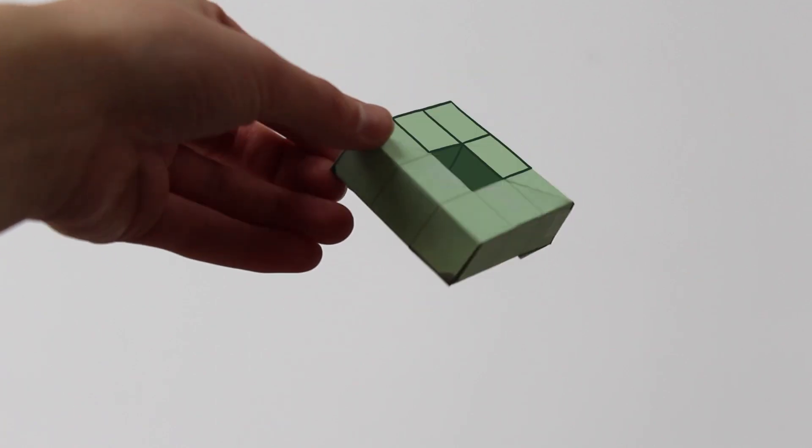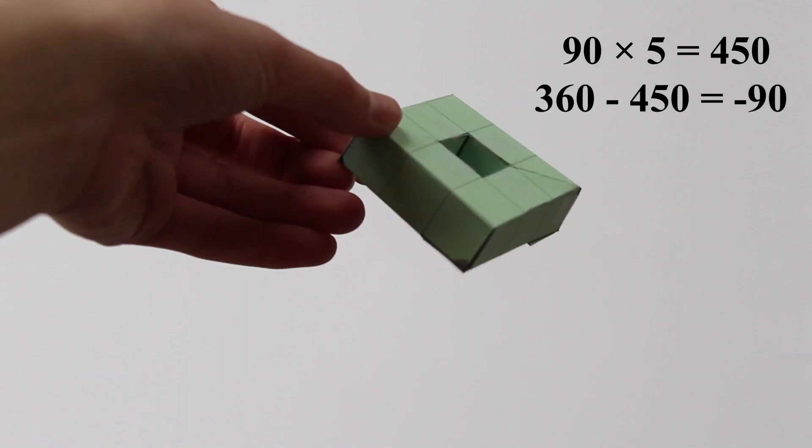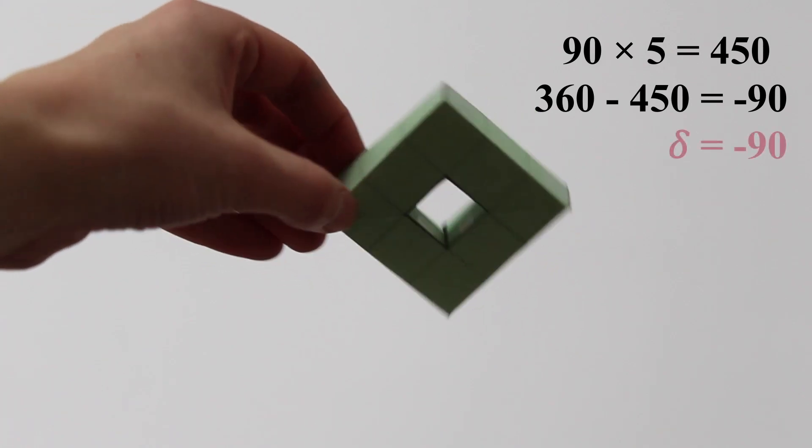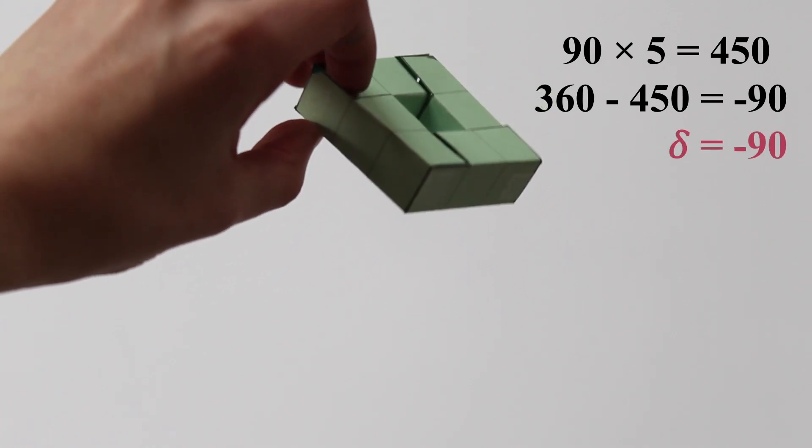At the inside corners, there are five squares meeting at a vertex. This means that there is too much angle. So the angle deficiency is negative. Around each of these vertices, there is an angle of 90 times 5, which is 450 degrees. And 360 minus 450 is negative 90 degrees. So each of these vertices has an angle deficiency of negative 90.